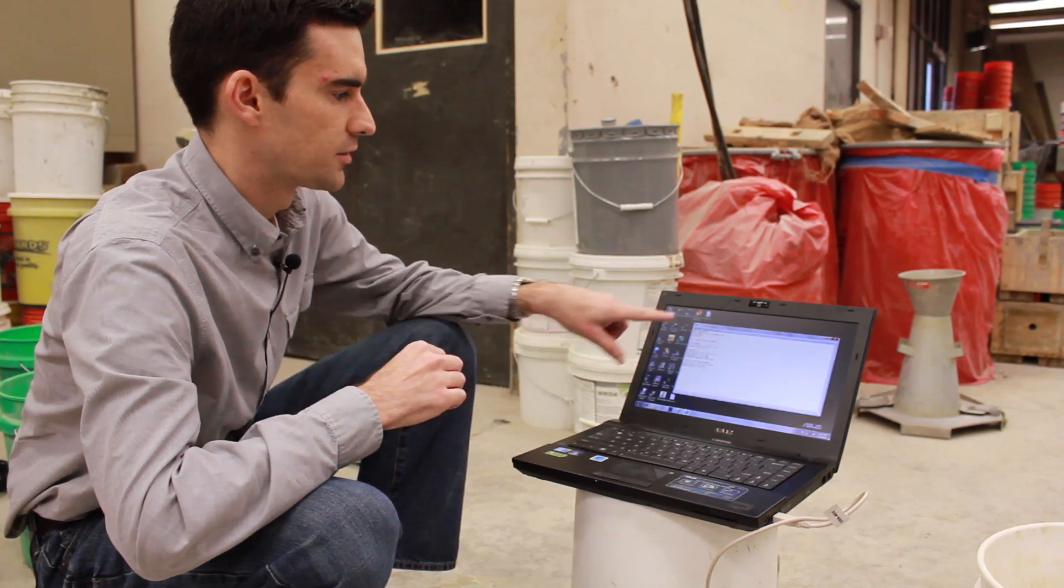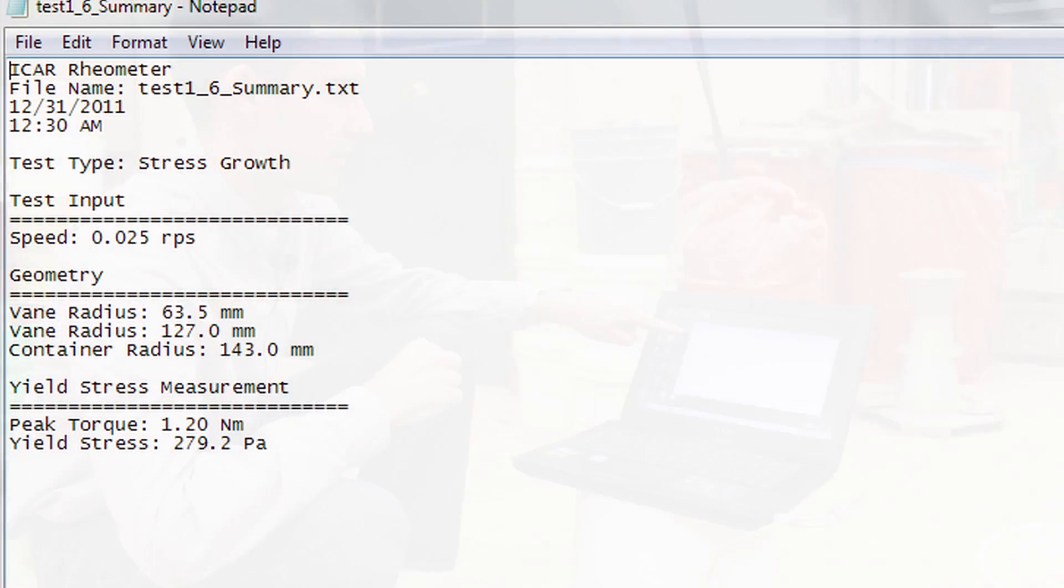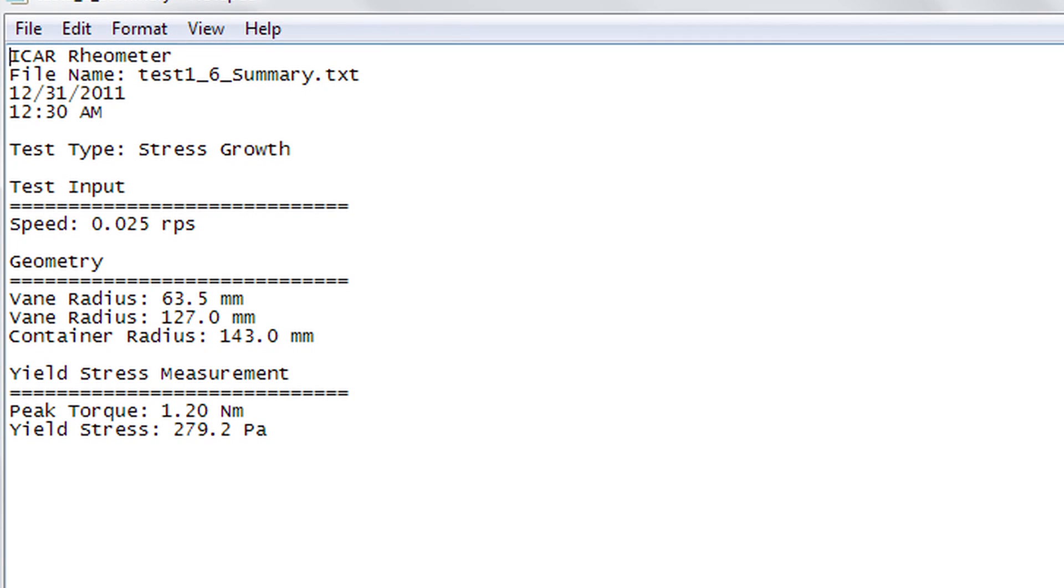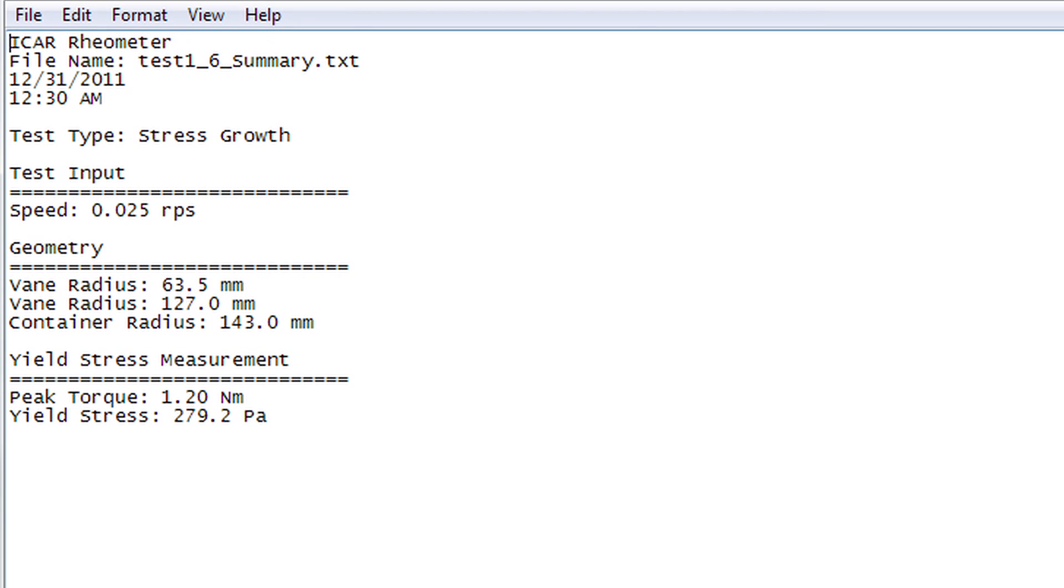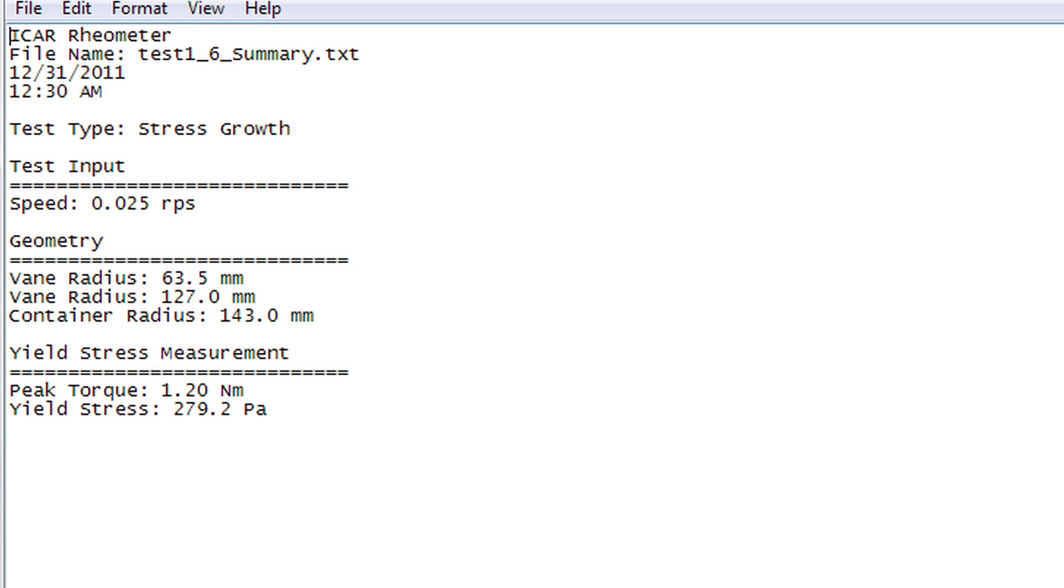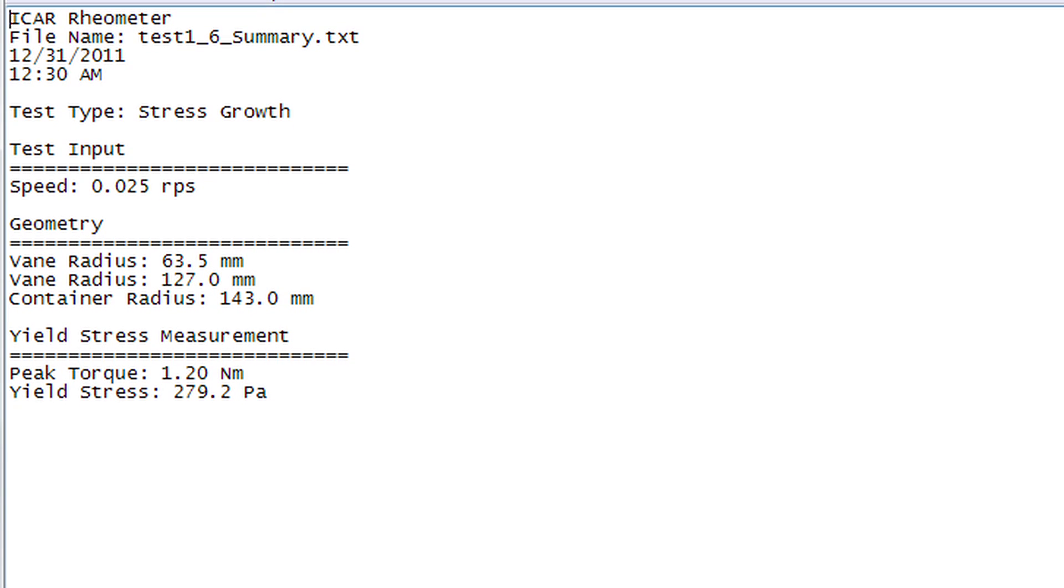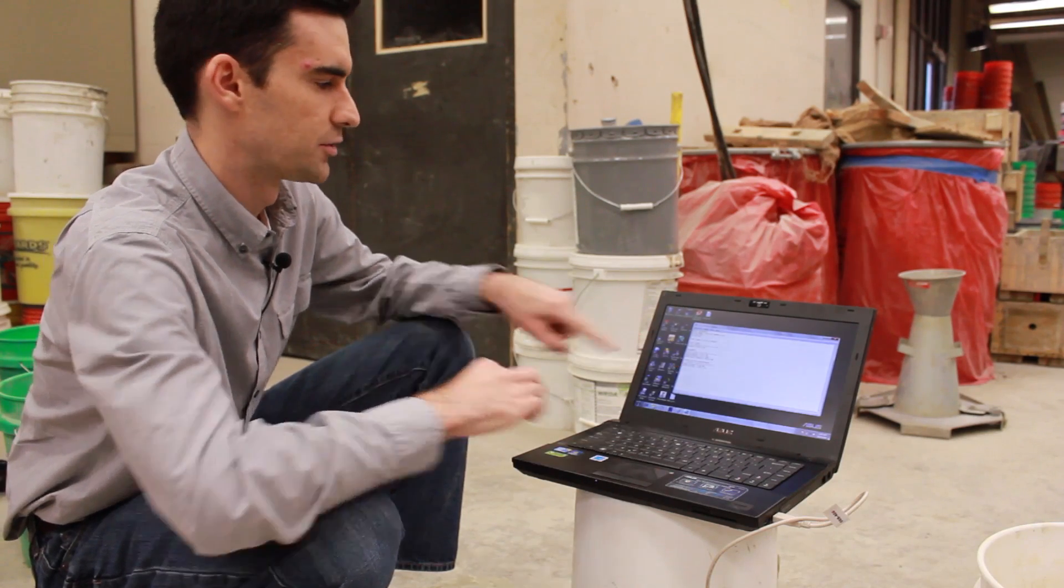Here's a summary file for the stress growth test we ran. You can see it starts off with the file name and the time and date of the test. It tells us we ran a stress growth test and that we operated at a speed of 0.025 revolutions per second. It also records the geometry. It then tells us the peak torque and the calculated yield stress, which in this case is the static yield stress.